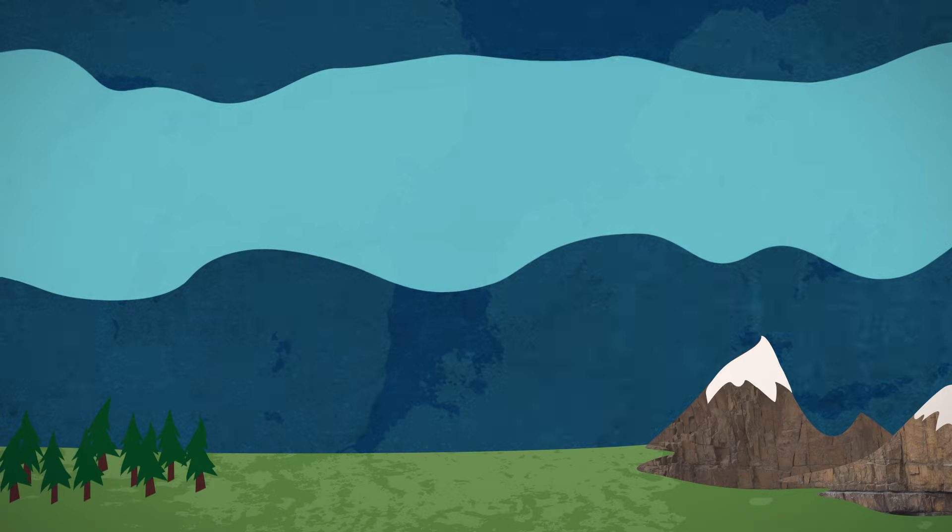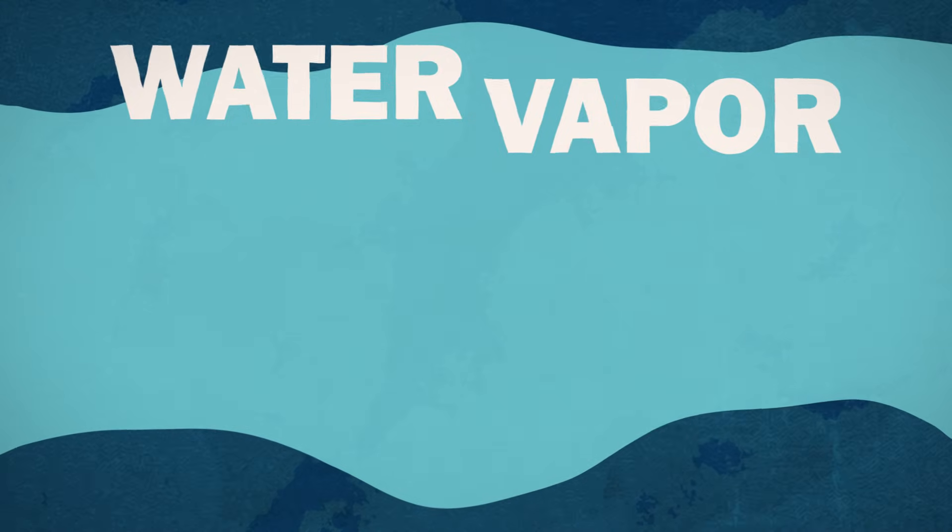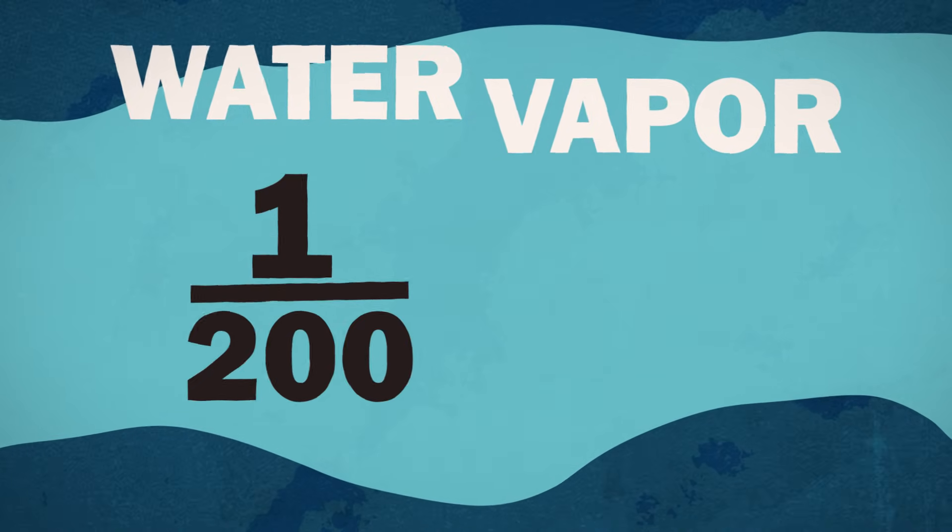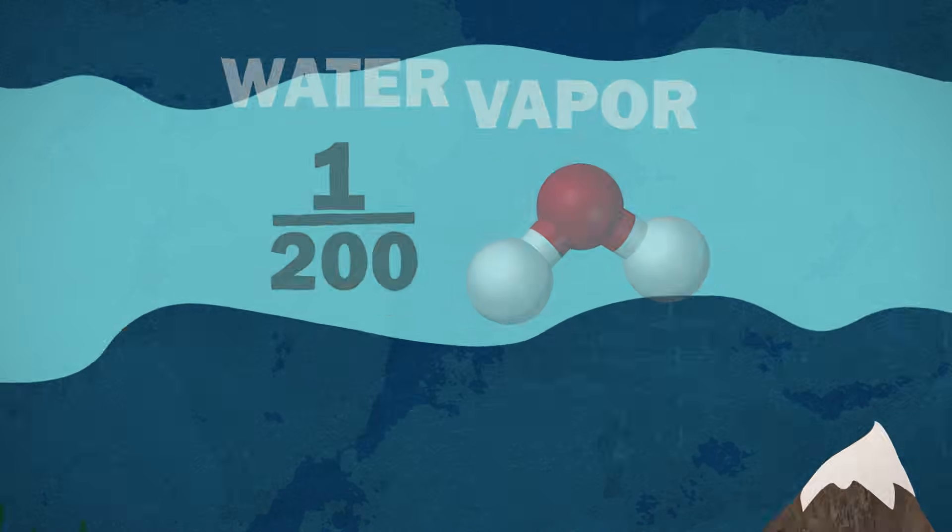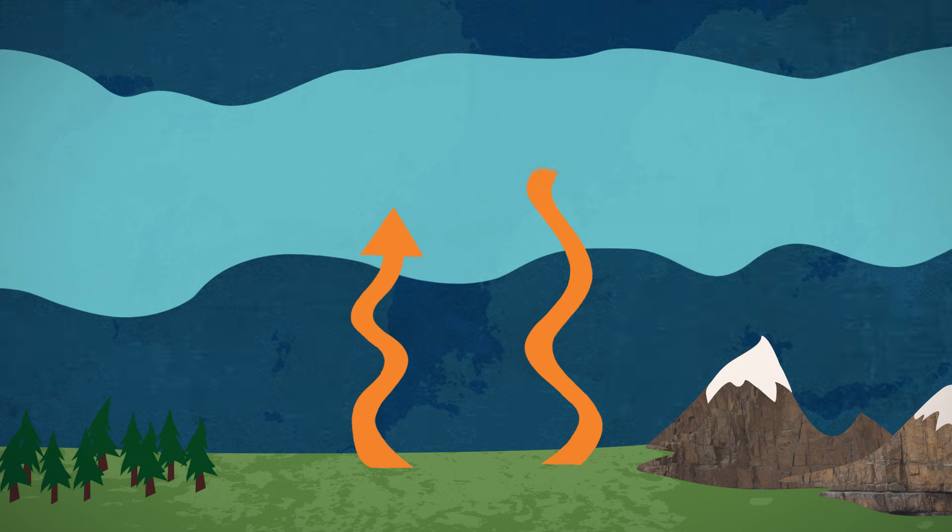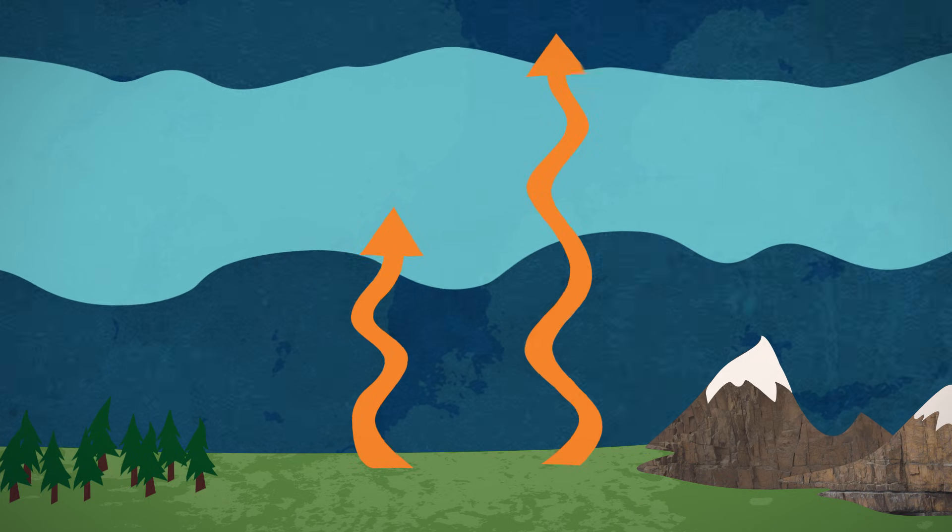The gas that's trapping the most total heat is water vapor. One out of every 200 air molecules is H2O, enough to trap about half the heat given off by Earth and help make our planet habitable.